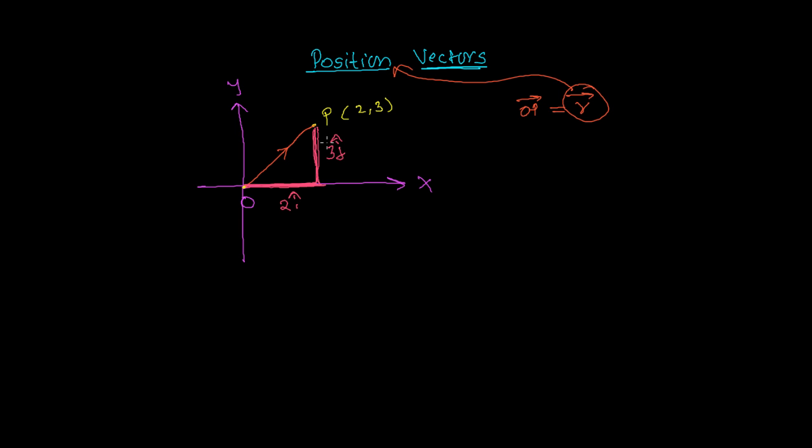So 3 units you're moving in y-axis and 2 units you're moving in x-axis. So position vector OP or simply you can say R is 2i plus 3j. And here this 2i is actually the x component and this 3j is the y component.